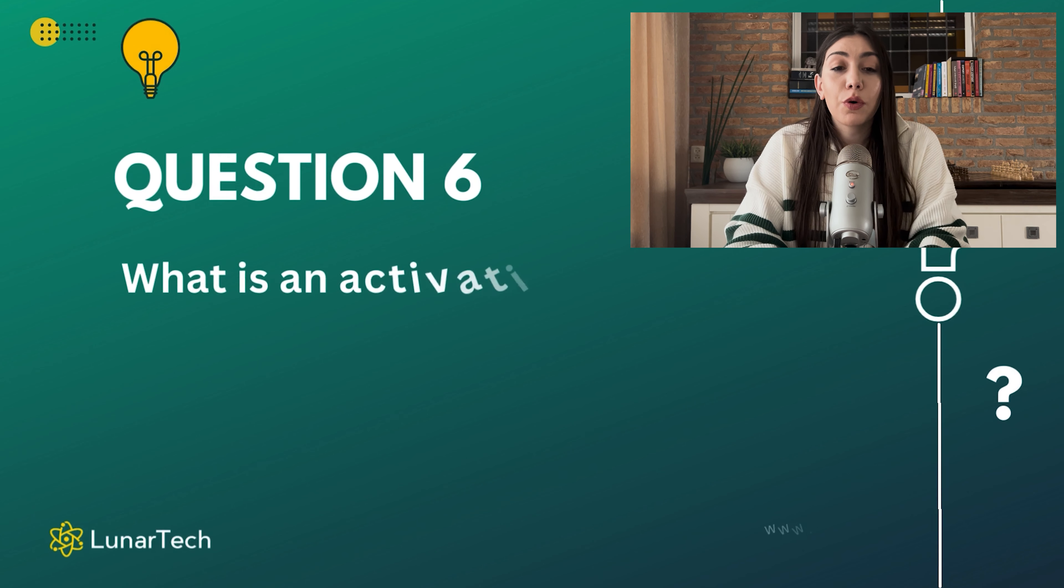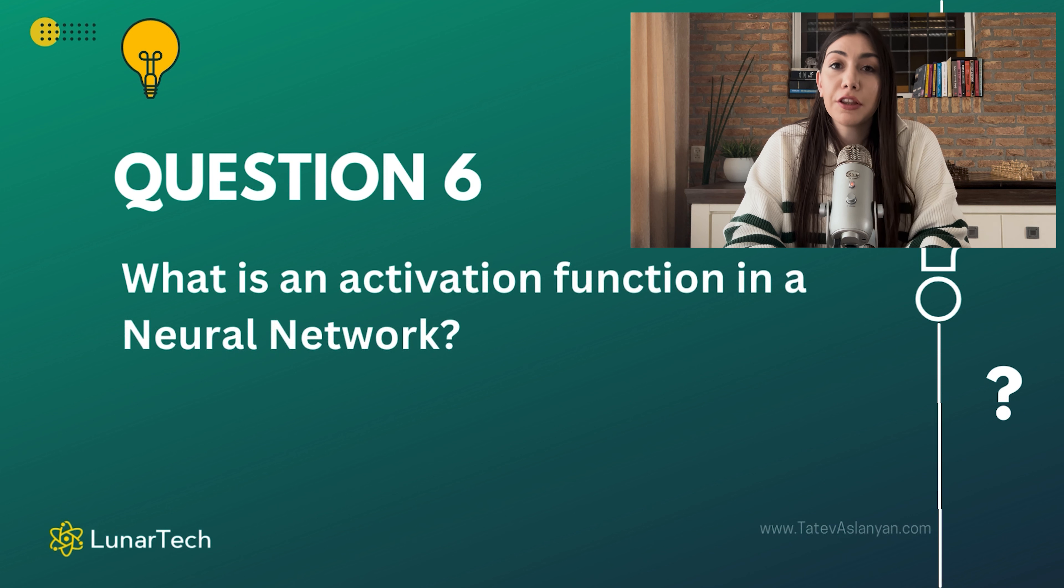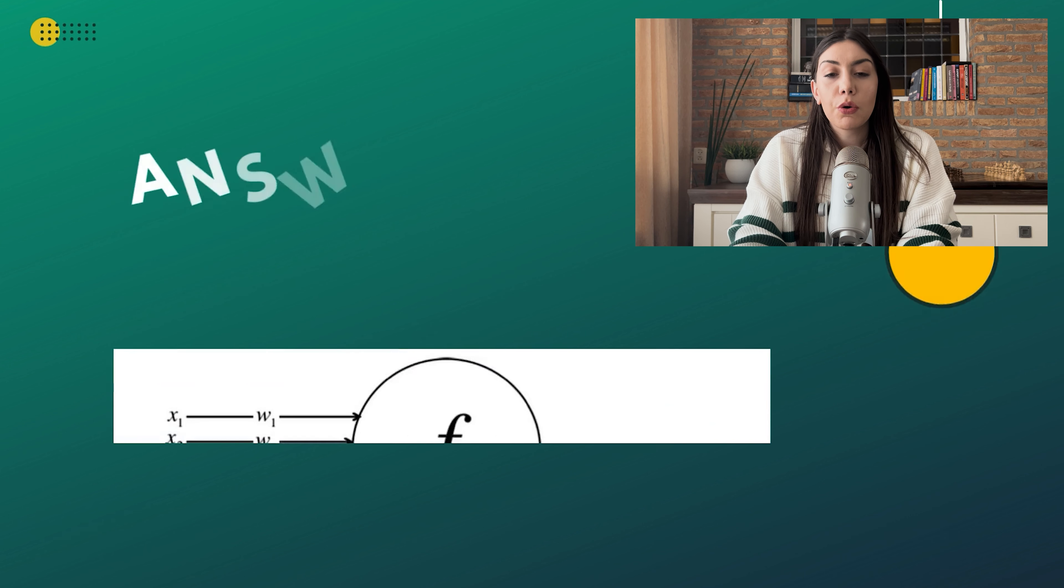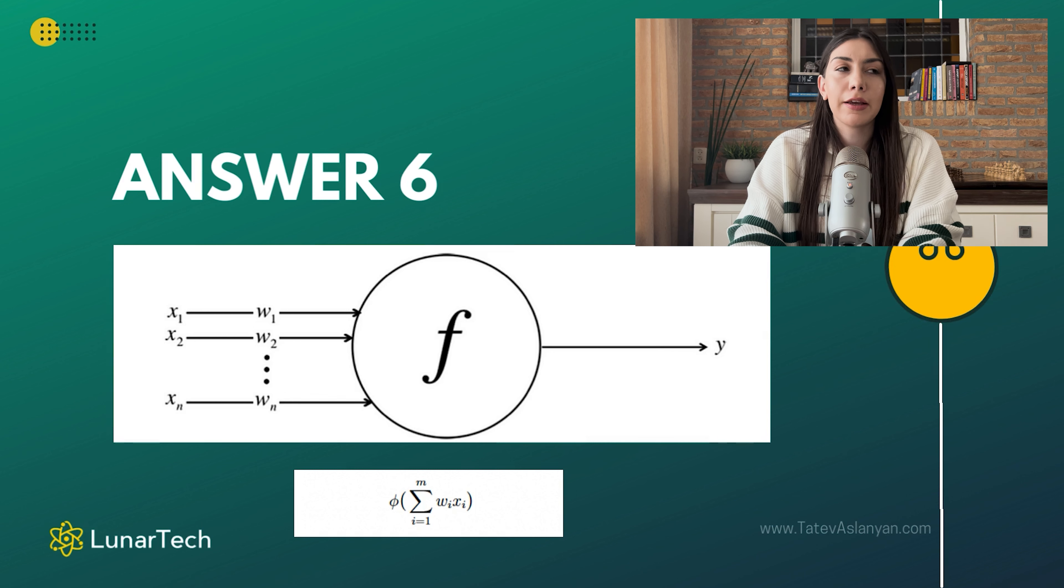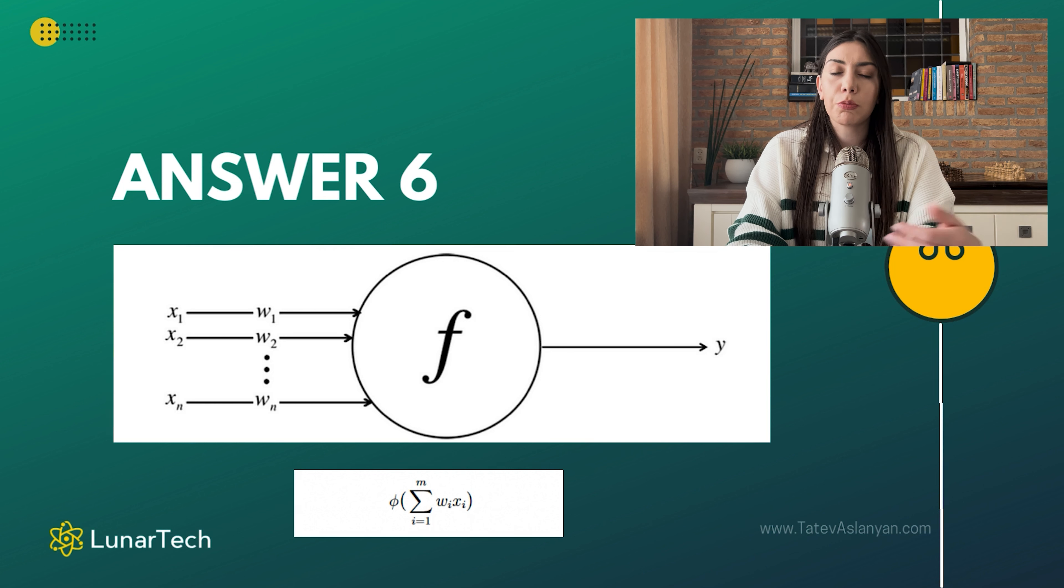So the next question is: what is an activation function in neural networks? Activation functions in neural networks play a crucial role, and the choice of activation function will define the performance of your neural network. By now we have already spoken a lot about the weights and how we compute the z-scores using the weights, the input data or the previous layer's output. We add the bias vectors to obtain the z-scores.